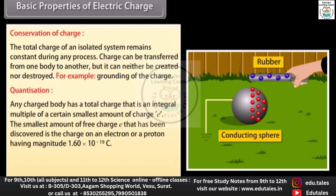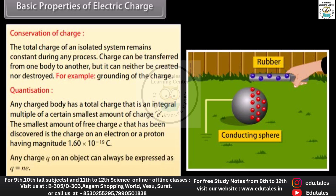Quantization: any charged body has a total charge that is an integral multiple of a certain smallest amount of charge e. The smallest amount of free charge e that has been discovered is the charge on an electron or a proton, having magnitude 1.60 × 10⁻¹⁹ coulomb. Any charge q on an object can always be expressed as q = ne, where n is an integer.